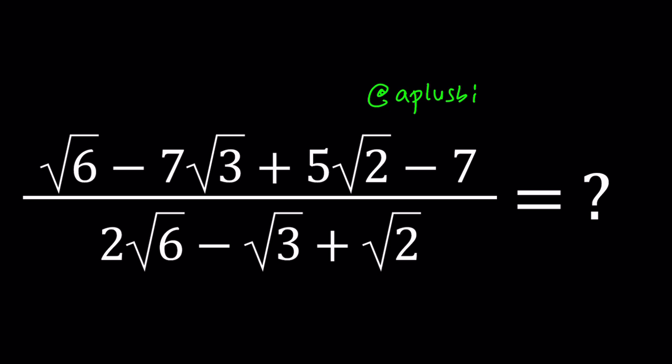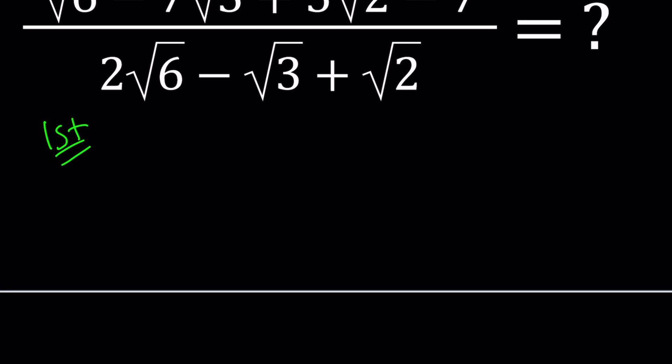Looking at this problem, I noticed that the coefficients of root 6 have the ratio 1 to 2. So could the answer be one half? No, because if you multiply the numerator by 2 you don't get the denominator, so it's a little more complicated. But what is this equal to? Some type of radical expression — that's going to be our first method.